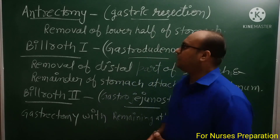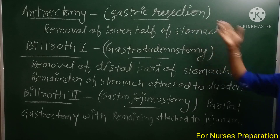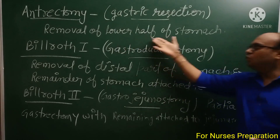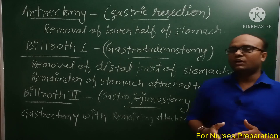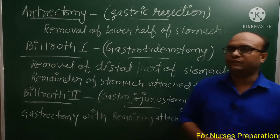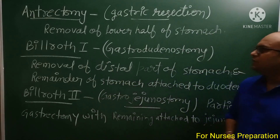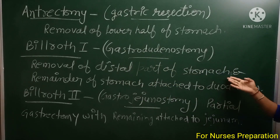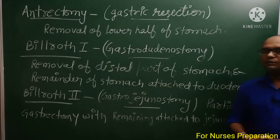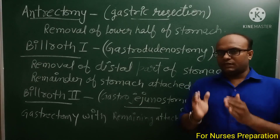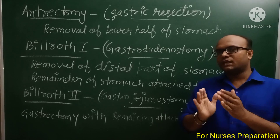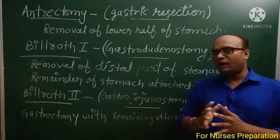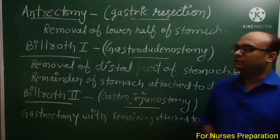Next surgical procedure है antrectomy (gastric resection) — यह removal of lower half of stomach है। Antrectomy procedure में stomach का lower half part remove कर देते हैं। Next आता है Billroth I — इसे gastroduodenostomy भी कहते हैं। इसमें stomach का distal part हटा देते हैं और remaining stomach part को duodenum से attach कर देते हैं।